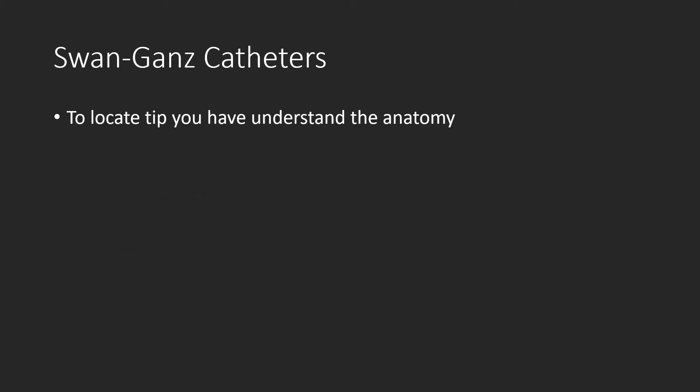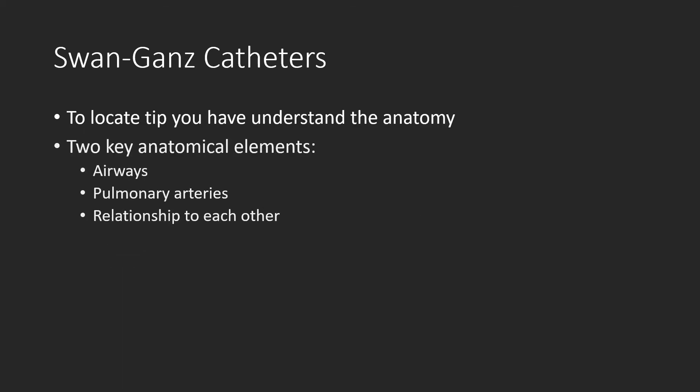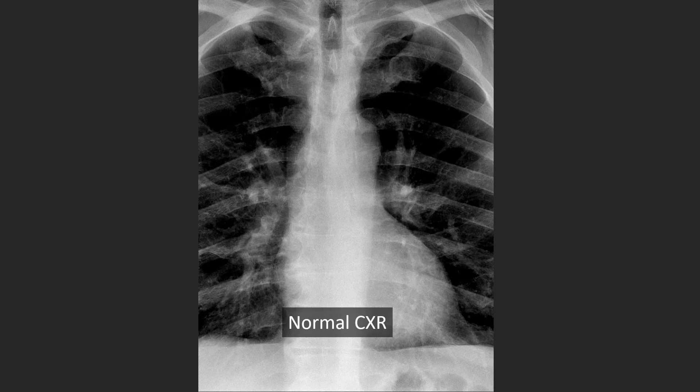In order to locate the tip, you have to understand the anatomy. The two key elements here are the airways and the pulmonary arteries and their relationship to each other. So let's quickly review that.